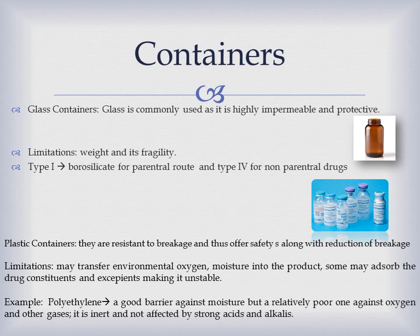Glass containers are the most commonly used — they are highly impermeable, very protective, and economic, found in various forms and shapes, like the amber-colored glass which protects several drugs from photodegradation. They have some limitations, like being heavy and easily broken. On the other hand, plastic containers are extremely resistant to breakage, offering safety to consumers, along with reduction of breakage loss. However, some types of plastics can absorb the constituents and excipients of the drugs making it unstable, and others can transfer environmental oxygen and moisture to the product — for example, polyethylene provides good barriers against moisture but relatively poor barriers against oxygen and other gases.